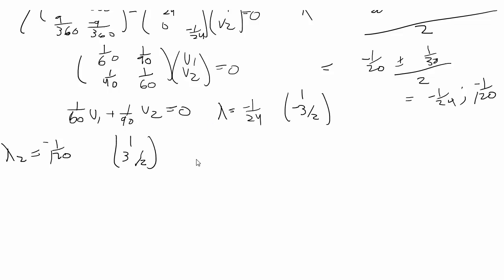Anyway, now you can write the solution, the general solution, and this is an IVP problem. So we're going to eventually find the coefficients, but we have c1e to the, let's do this one first, negative 1, 20, 1, 3 halves, plus c2e to the negative 1 over 24, and that's 1, negative 3 halves.